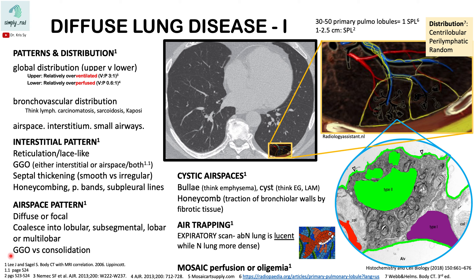Differentiating ground-glass opacification versus consolidation: ground-glass opacity is when you can still see the airways or vessels through that area of increased attenuation. Consolidation means you can no longer see the vessels or airways through it.